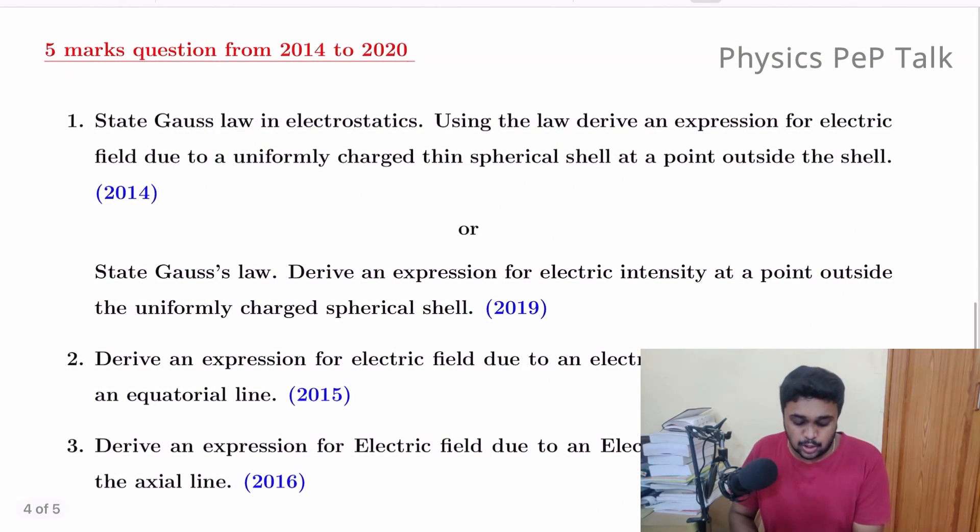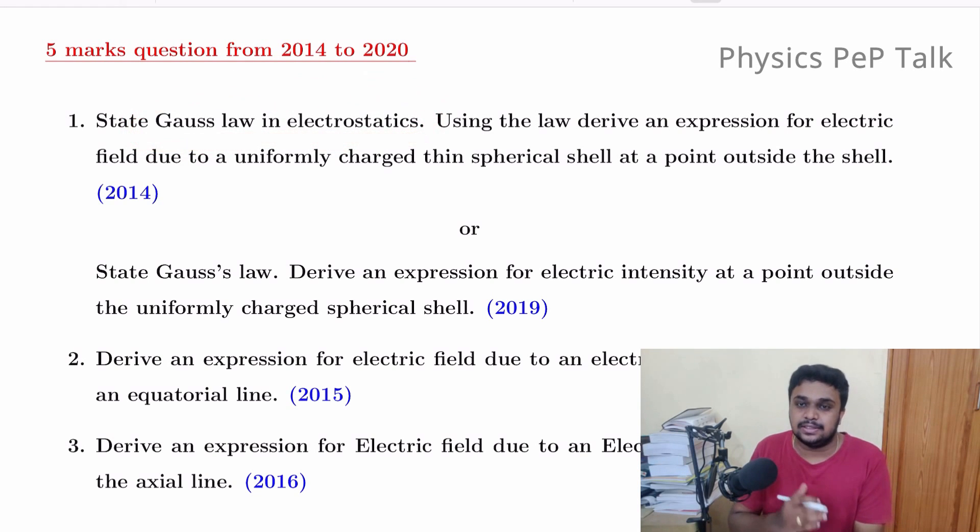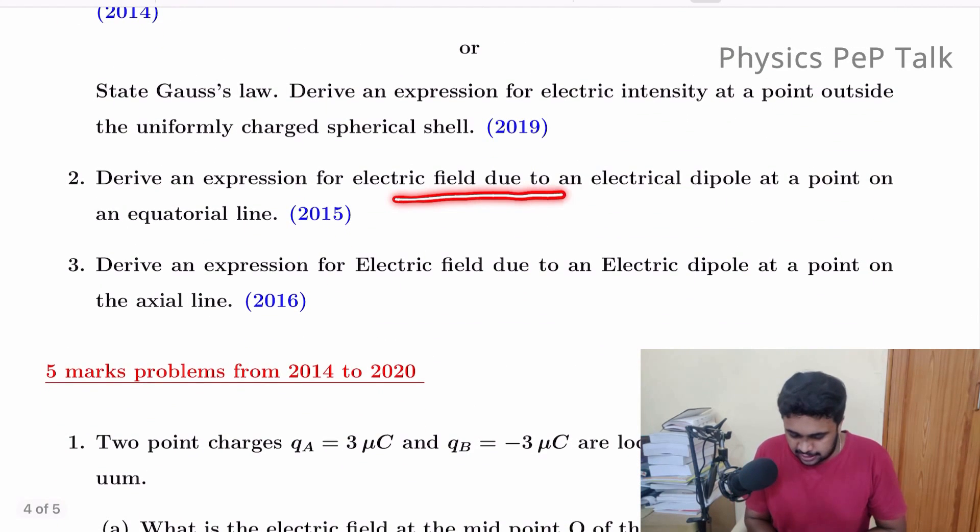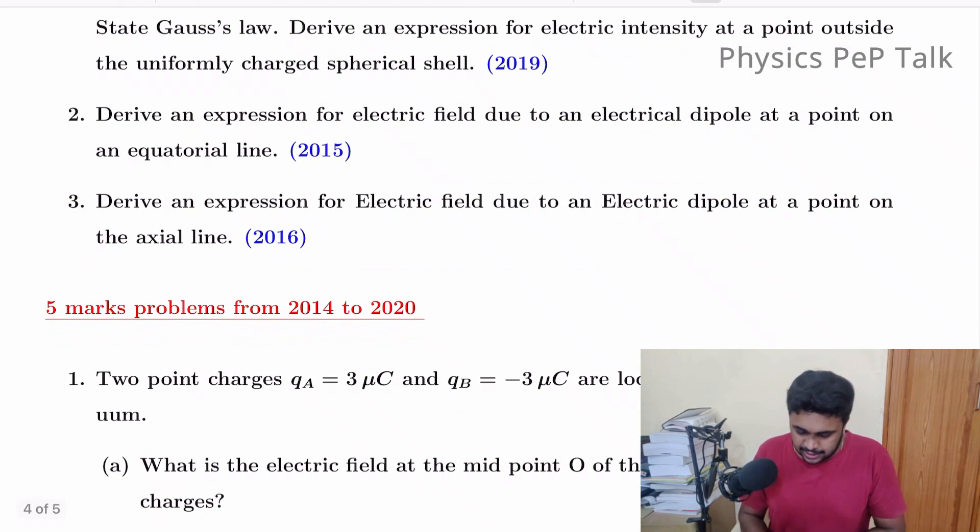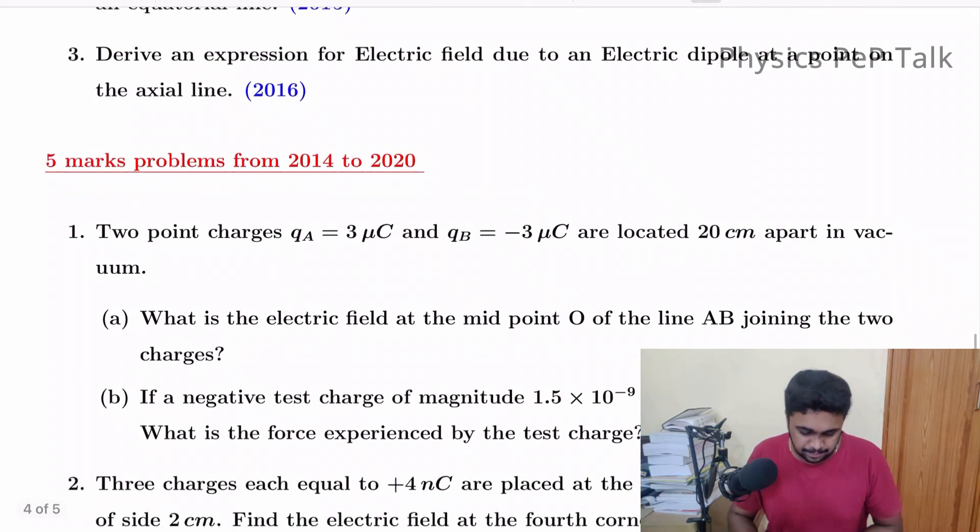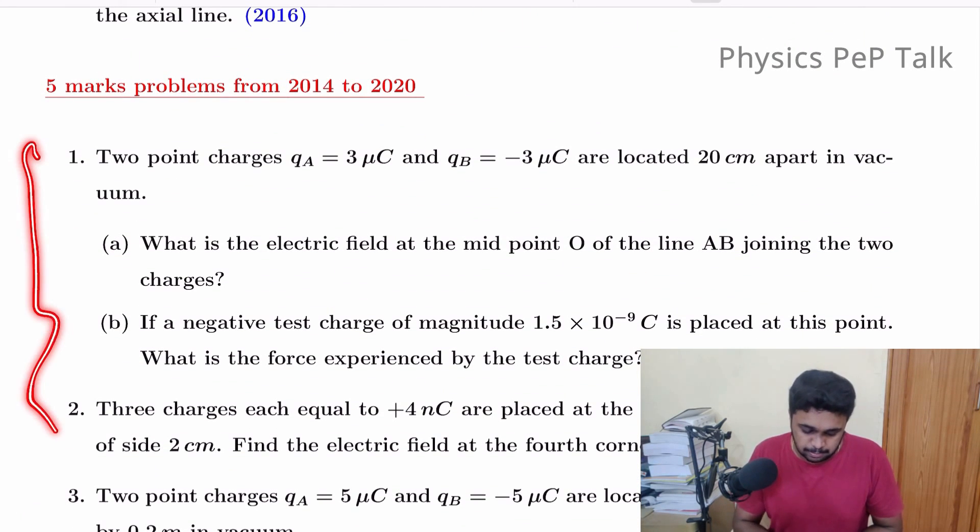Five mark questions. State Gauss law in electrostatics. You have one mark, you have to break up. Using the law, derive an expression for electric field due to uniformly charged thin spherical shell at a point outside the shell. Using Gauss law, you have three derivations. In our playlist, you have three derivations. Out of these three derivations, one is due to an electric dipole at midpoint, axial line and equatorial line. This is the electric field. The electric dipole on the axial line with these two points.